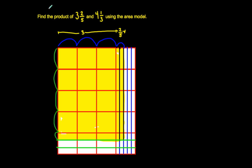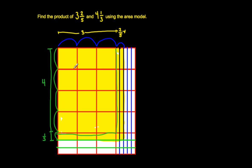So this is 4 and 1 third. What I'm essentially doing here is multiplying 4 times 3. If you see the 4 times 3, I am focused on this area right here. 4 times 3 is going to give me 12. So I write a 12 right here.